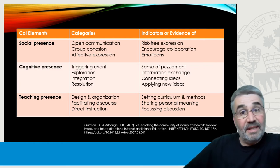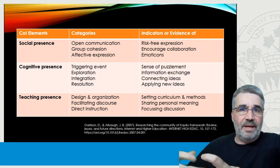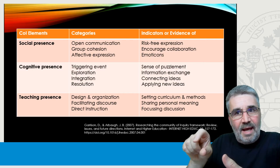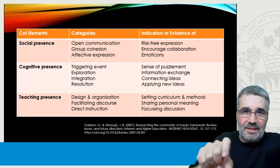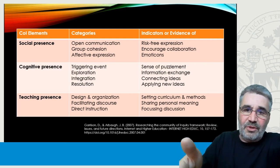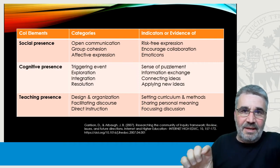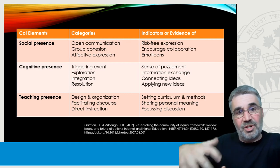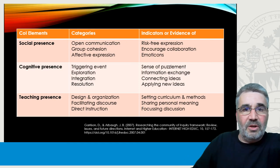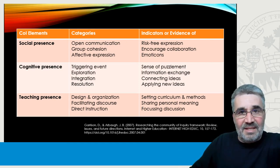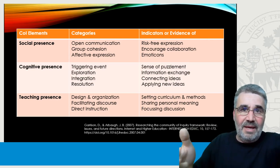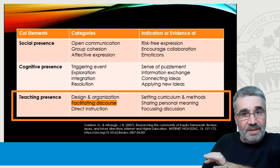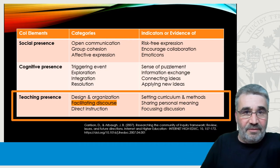The community of inquiry is a theoretical model, so work has been done to flesh it out and expand on these different presences. Work from 2007 by Garrison and Arbaugh started categorizing different aspects of the elements. What goes into social presence? Open communication, group cohesion, effective expression — all of those are categories within social presence. Within teaching presence, we can see where facilitation fits in explicitly around the idea of facilitating discourse as one of the categories.